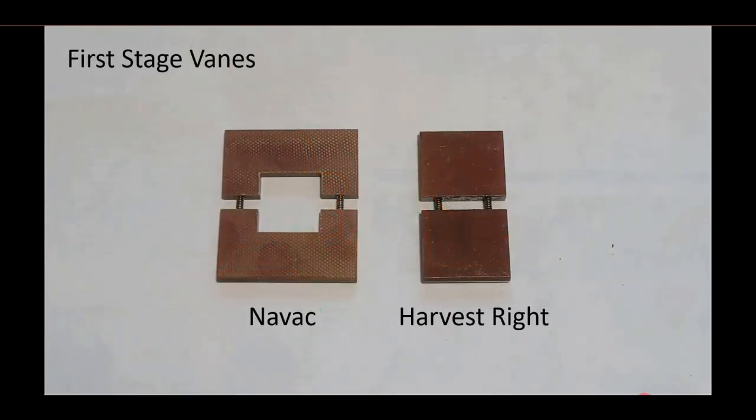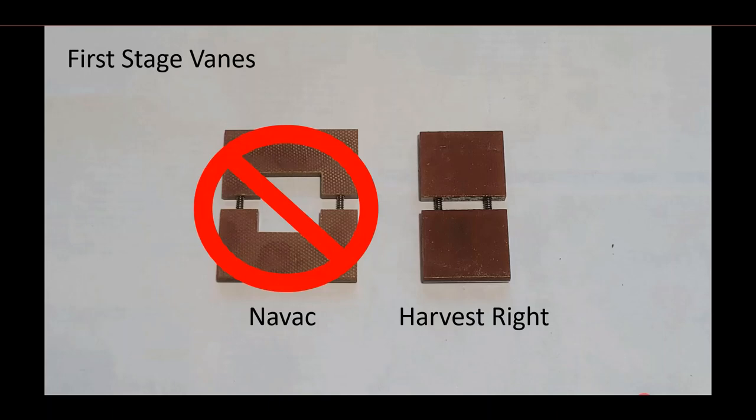The greatest problems that we're going to face in rebuilding the premier pump is the first stage veins. The first stage veins are not the same between the NAVVAC pump and the Harvest Right pump. They will not work. Without these, the complete rebuild is going to be insufficient. But I am still looking to see if there is a source for the first stage veins.